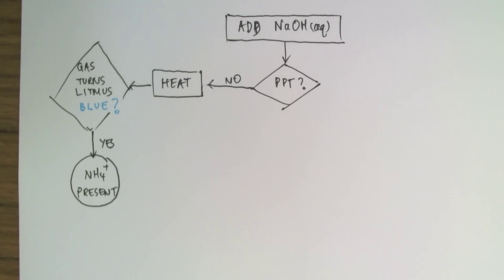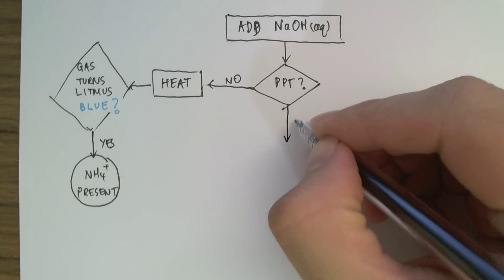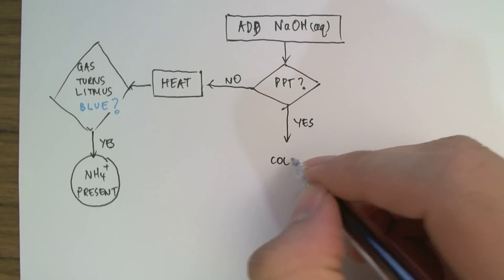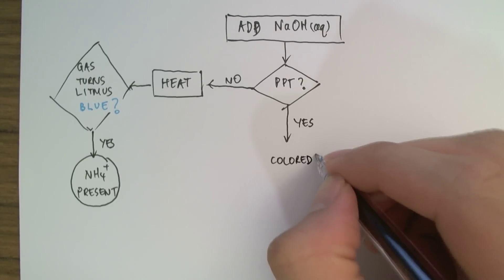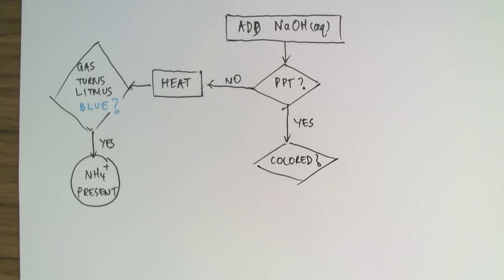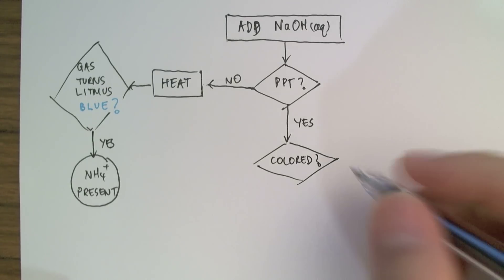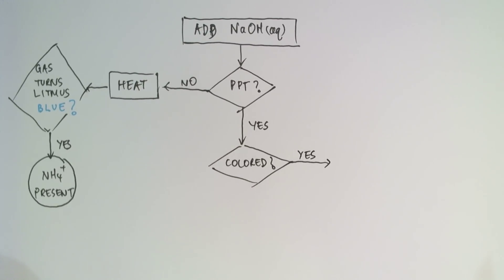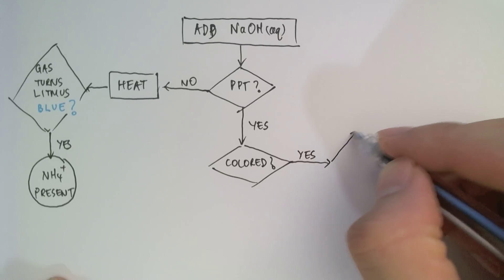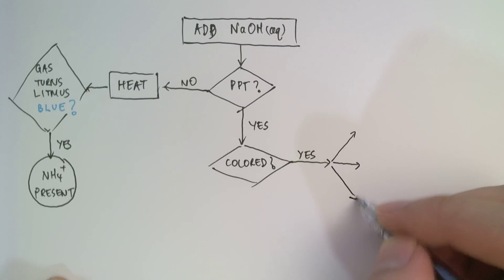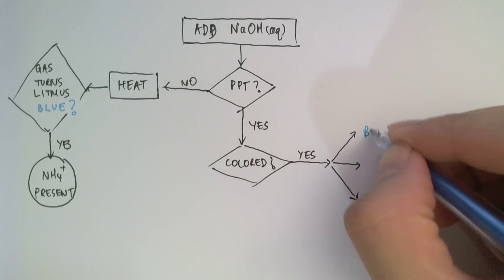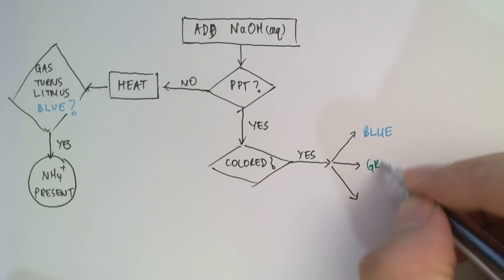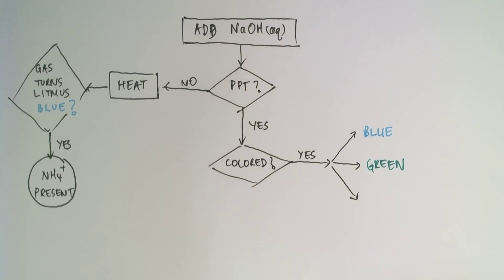On the other hand, if a precipitate is indeed formed, then we can make further considerations based on whether or not the precipitate is colored. If the precipitate is colored, then we have three possibilities. Whether the precipitate is blue, green, or brown.